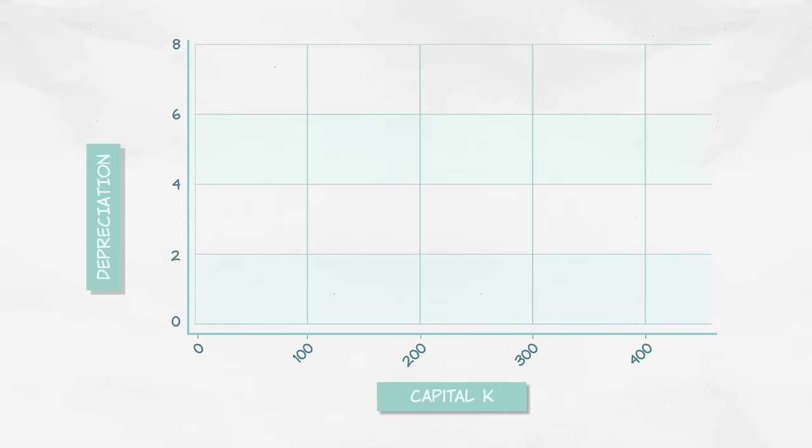Now let's put the amount of capital on the horizontal axis and the amount of depreciation on the vertical axis. We can then model the relationship like this. Depreciation increases at a constant rate as the capital stock increases. The more capital you have, the more capital depreciation you have.